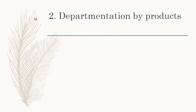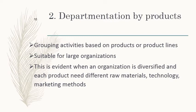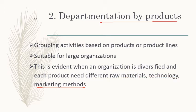The second type of departmentation is by products, where grouping of activities is based on the products or product lines rather than functions. This is suitable for large organizations with different product lines, especially when the organization is diversified and each product needs different raw materials, technologies, and marketing methods. You cannot put every egg in the same basket — departmentation by products addresses this.